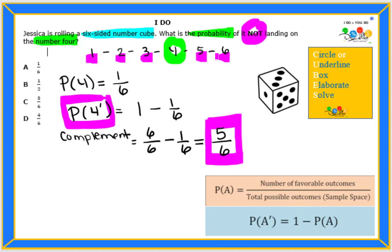All of those numbers are not four. How many numbers is that? Correct. That is five out of six that are not four. So the complement or the probability of not landing on four is five out of six. So C is our correct answer.